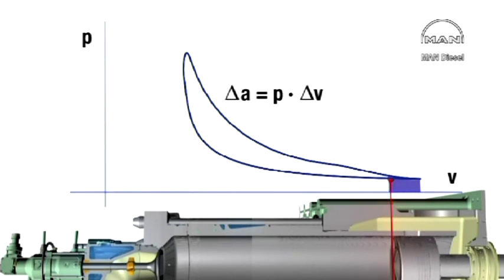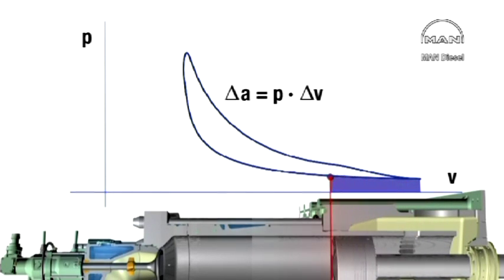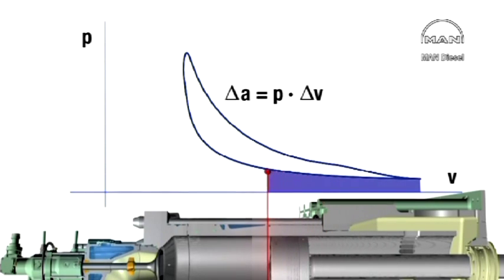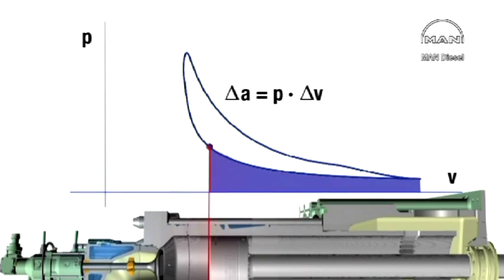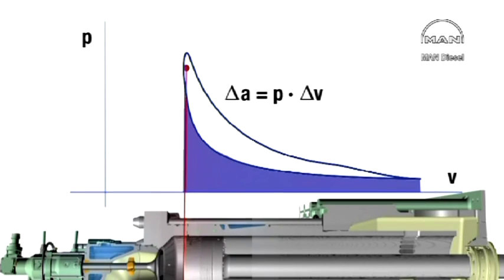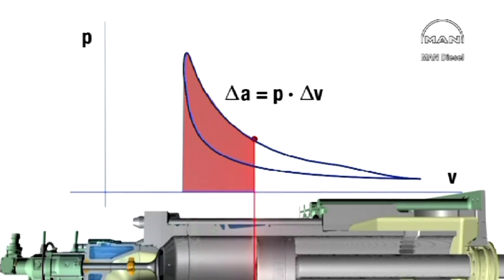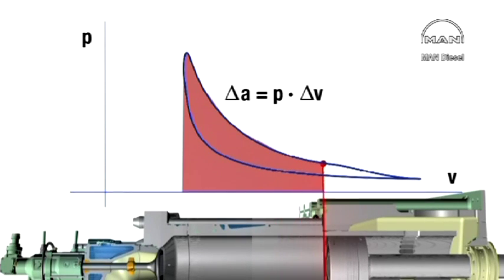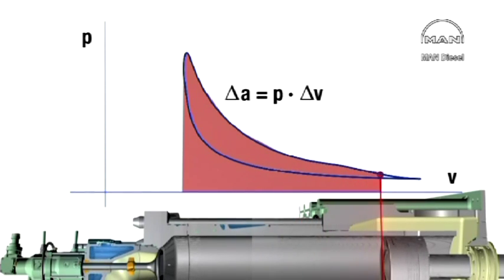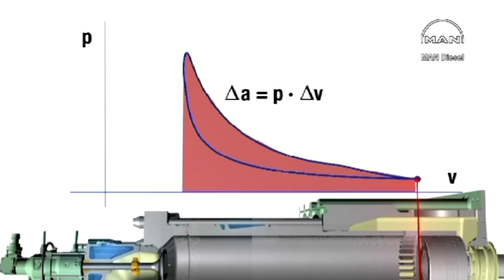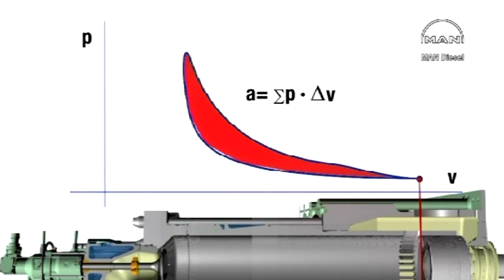The amount of work transmitted to the piston during a full engine revolution must therefore be the difference between that delivered during the compression and that received during the expansion. In other words, it's given by the area between the curves. Thus, A equals sigma P multiplied by delta V.